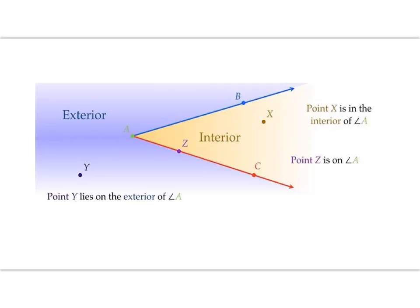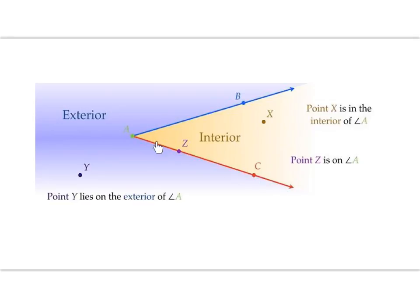Let's get familiar with our different bounded regions of an angle. You've got the exterior region, and you can have points that lie on the exterior of an angle. You have the interior region and points that can lie on the interior. Then you've got points that can lie on the angle itself.